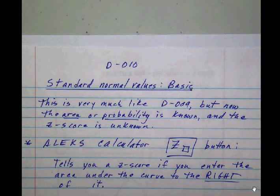Continuing on in the red slice, this is standard normal values, basic. What you're going to find here is that this lesson is very much like what you did in the last lesson, but now the area or probability is known, and what you don't have is the z-score.